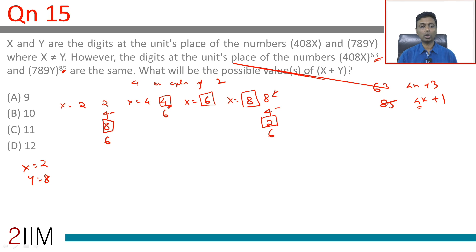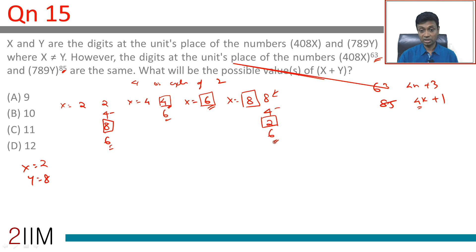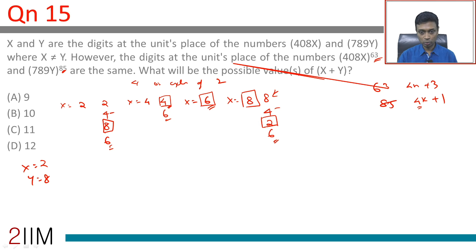If the last digit is 6, then 789y to the power 85 would also have to end in 6. That is only possible when the power is an even number, which is not the case here, so x cannot be 6 either. If x is 8, the last digit is 2, in which case y could be 2. So x equals 8, y equals 2 is possible.